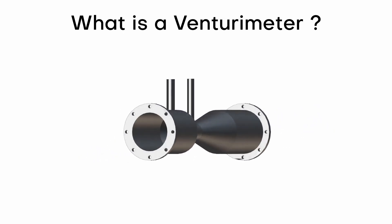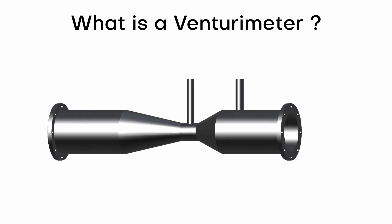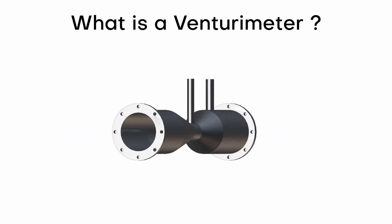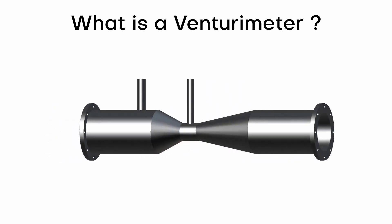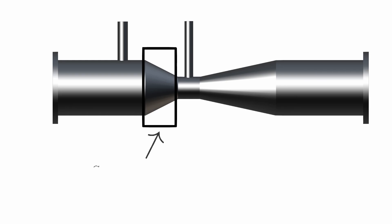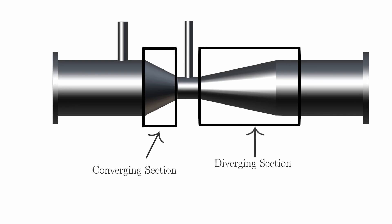So what is a venturi meter? A venturi meter, also known as a venturi tube, is a flow measurement device used to determine the flow rate of fluid in a pipe. It consists of a tapered tube with a constriction in the middle, creating a region of reduced cross-sectional area.